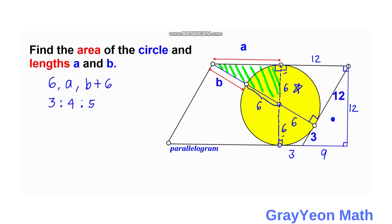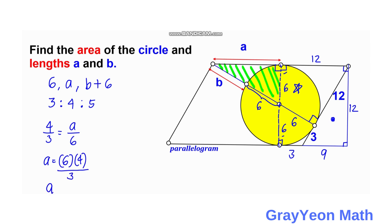We can use the ratio of the legs. Dividing the longer leg by the shorter leg gives 4 over 3. Setting this equal to a over 6, we get a equals 6 times 4 over 3, so a equals 8 units.